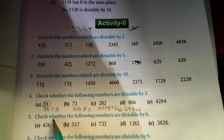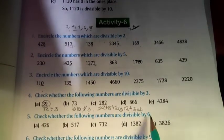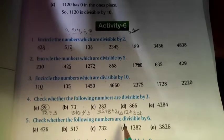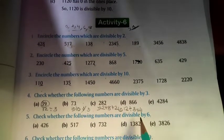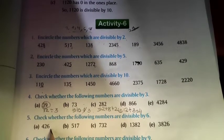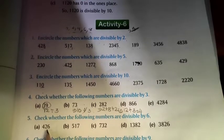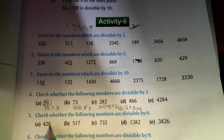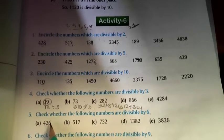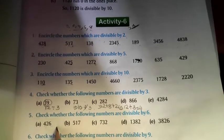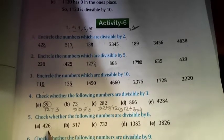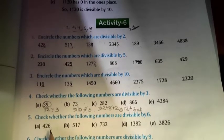Next question: check whether the following numbers are divisible by 6. The divisibility rule of 6 is that if the number is divisible by both 2 and 3, then we can say the number is divisible by 6. Number A, 426: this is an even number, so it is divisible by 2. Now we check if it is divisible by 3. We add all the digits: 4 plus 2 plus 6 equals 12, and 12 is divisible by 3. So 426 is divisible by 6 because it is divisible by both 2 and 3.